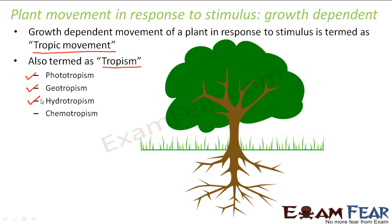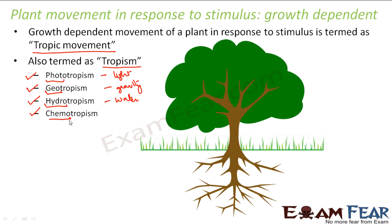The different types of tropic movements are: phototropism, geotropism, hydrotropism, and chemotropism. Phototropism means growth-related plant movement in response to light — the word photo means light. Geotropism means movement in response to gravity or earth. Hydrotropism is movement in response to water. And chemotropism is for chemicals.